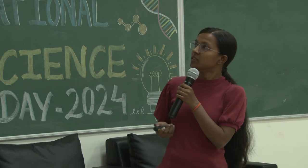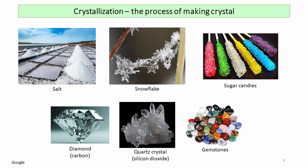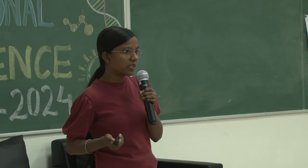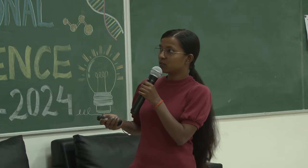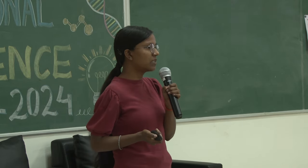Now I will show you some crystals found in nature. You have already seen salt. Snowflakes are a very beautiful crystal found in nature. Sugar candies — you can make these and enjoy at home. Diamonds are also a kind of crystal made up of carbon. Quartz crystal is made up of silicon dioxide. And there are stones made up of different minerals, polished so they look shiny and beautiful. These are some crystals you might have seen somewhere in nature.